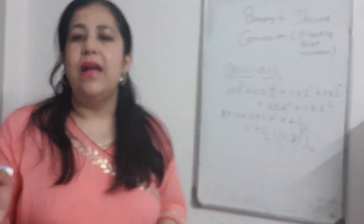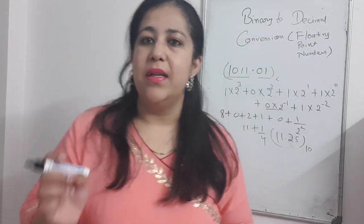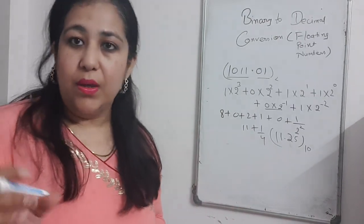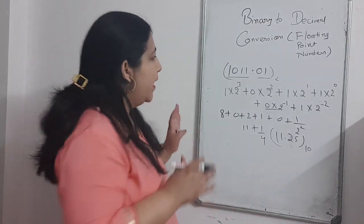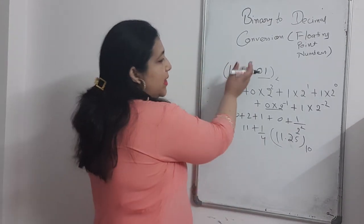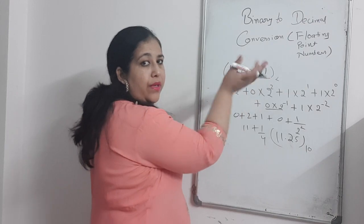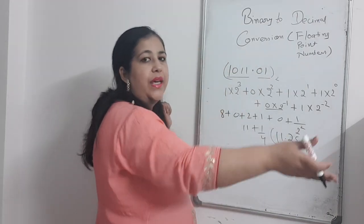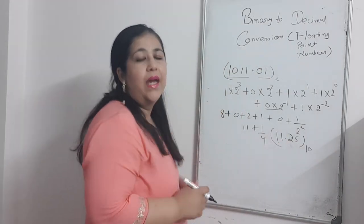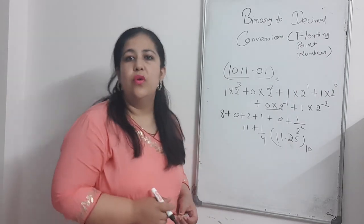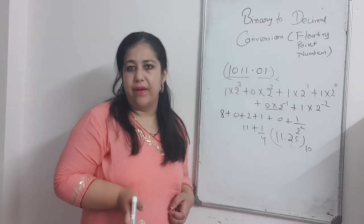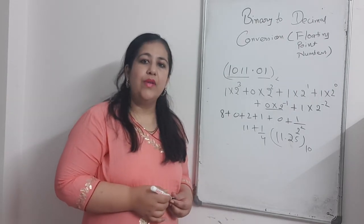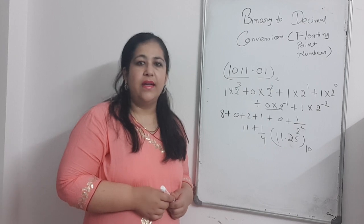So the answer is 11.25 in decimal. To convert floating point numbers to decimal, we treat the digits after the point as fractions, assigning them negative powers. The powers on the right side of the point are negative, and you calculate accordingly.